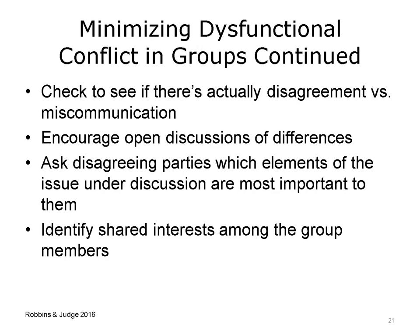The first step is to check that there really is disagreement on an issue and not just a misunderstanding, as human communication is an imperfect process. Encouraging open discussion of differences gives individuals the chance to exchange views. Focusing on overarching interests can keep people from getting mired in details. If an issue is multifaceted, ask individuals to identify which elements are most important to them. Having group members identify shared interests can also be a way to reduce divisiveness.